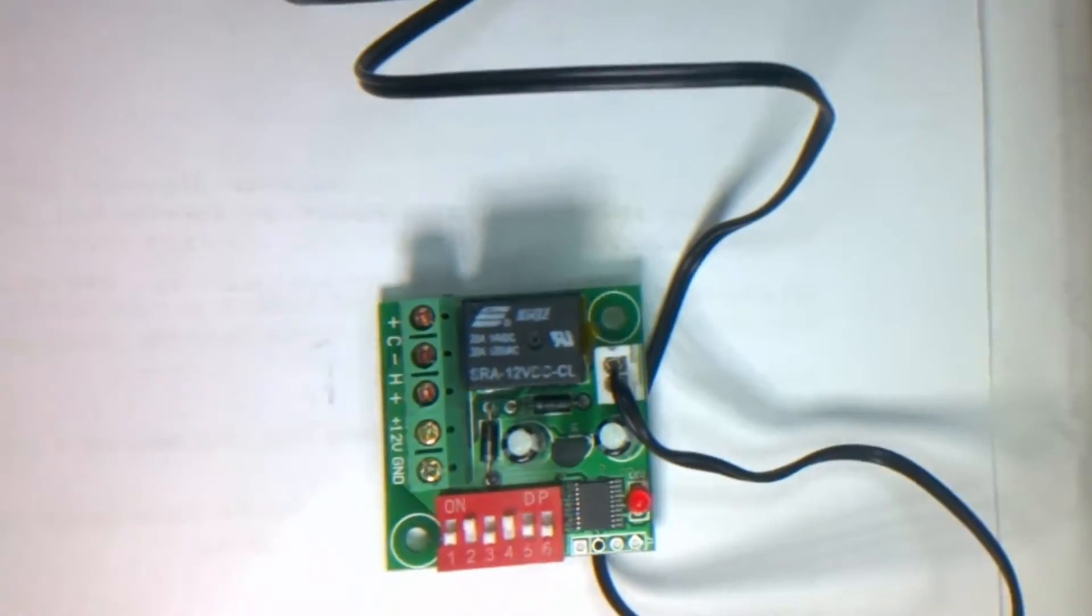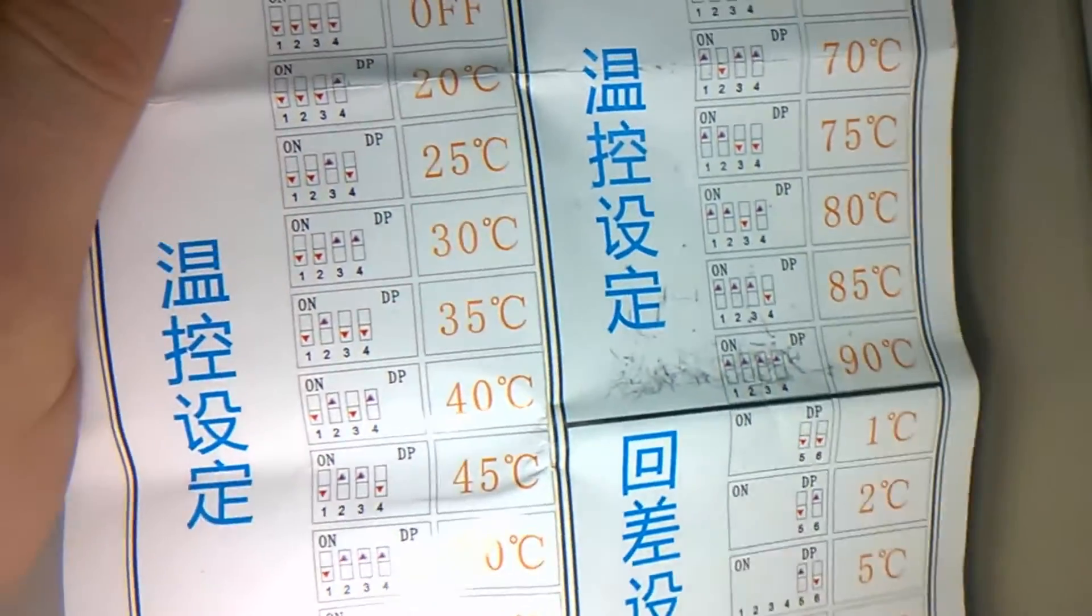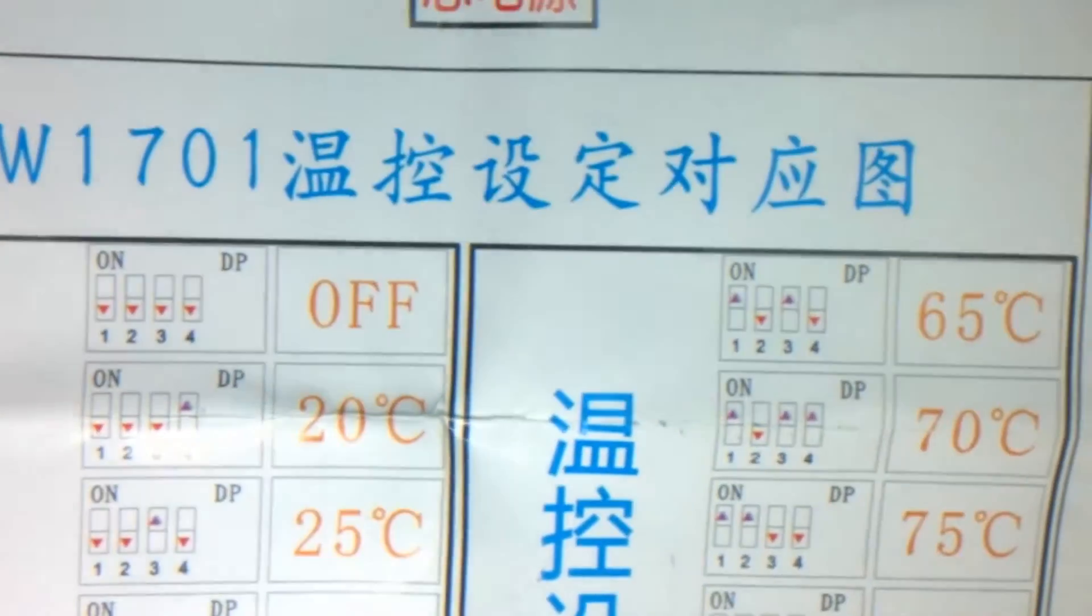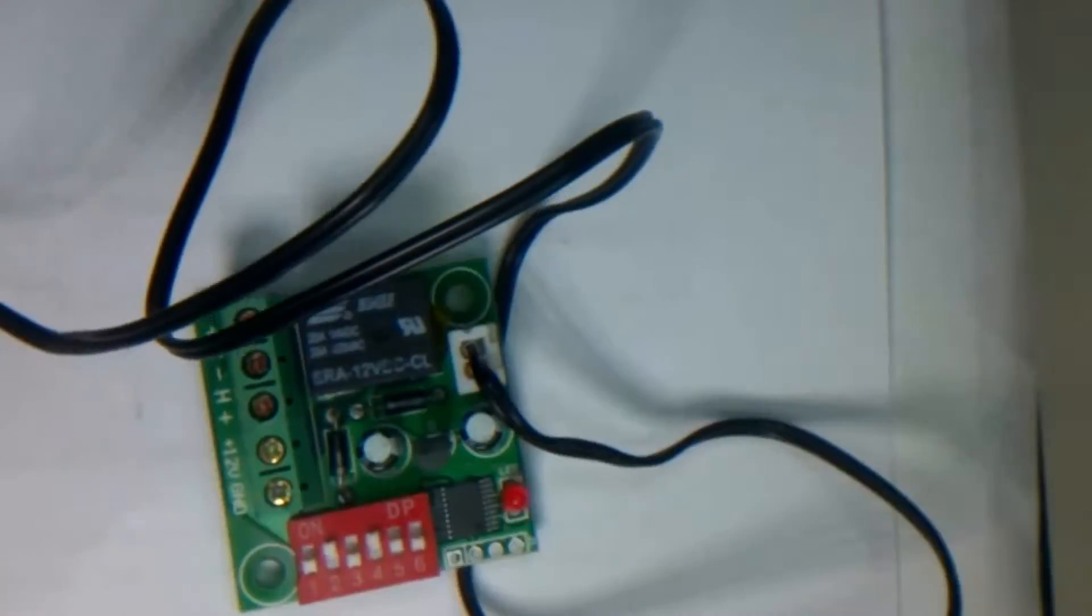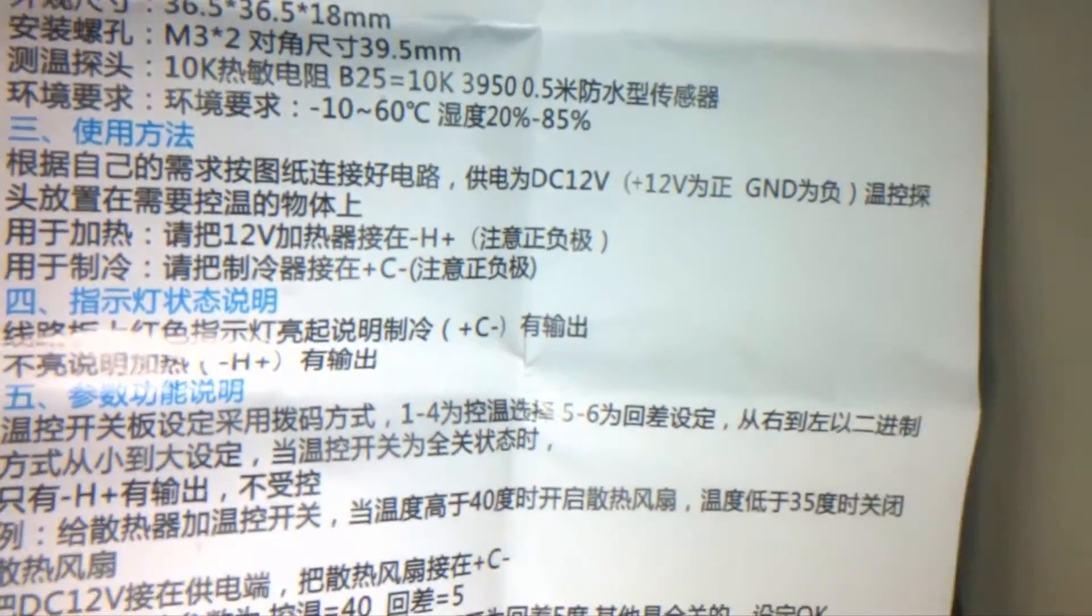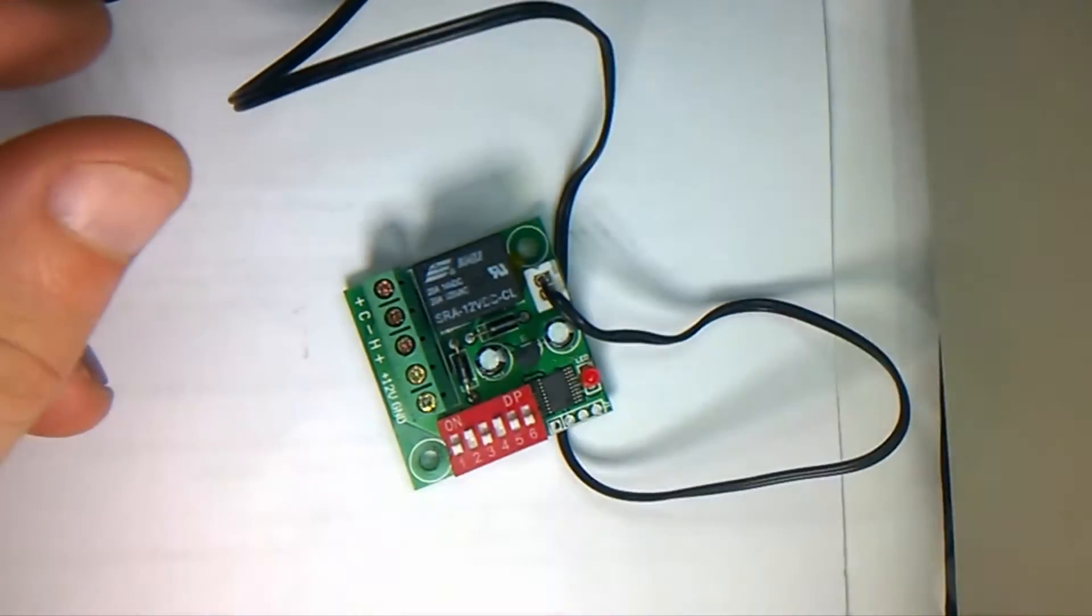Included with this you get documentation which tells you the settings for the temperatures and at the top there, the wiring diagram. At the back, some Chinese writing. Unfortunately I can't read that because I can't read Chinese.